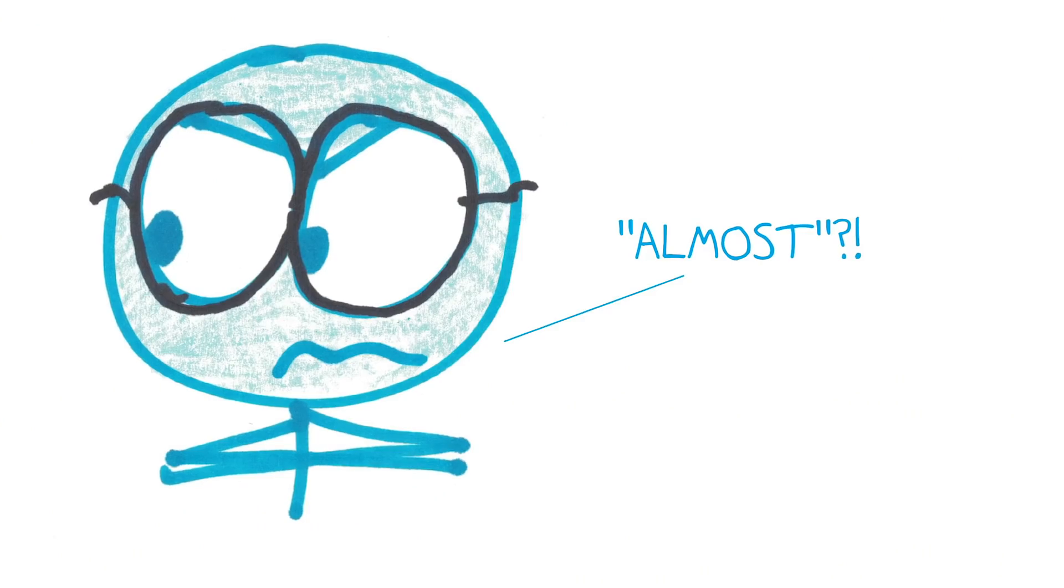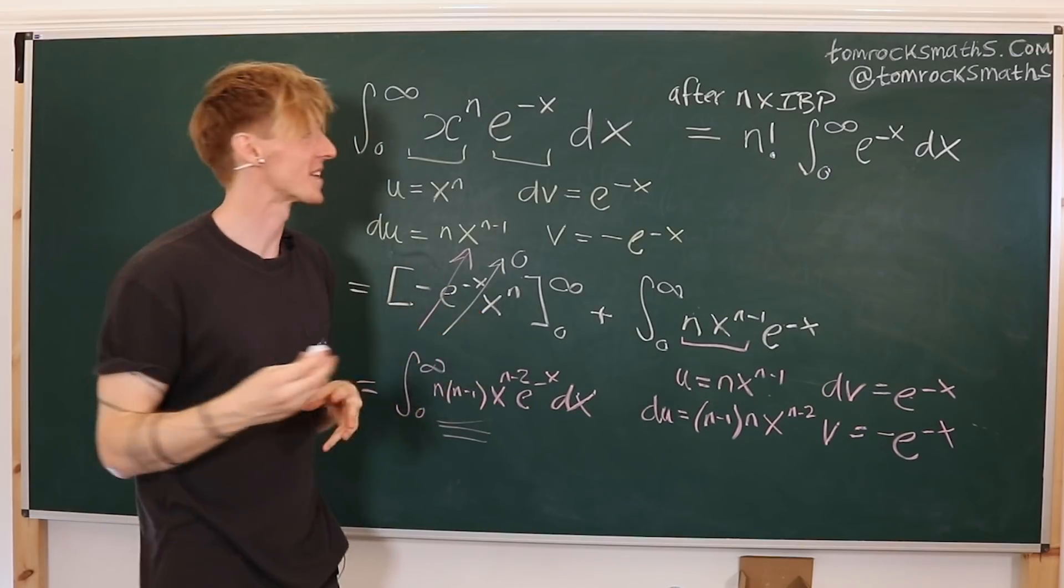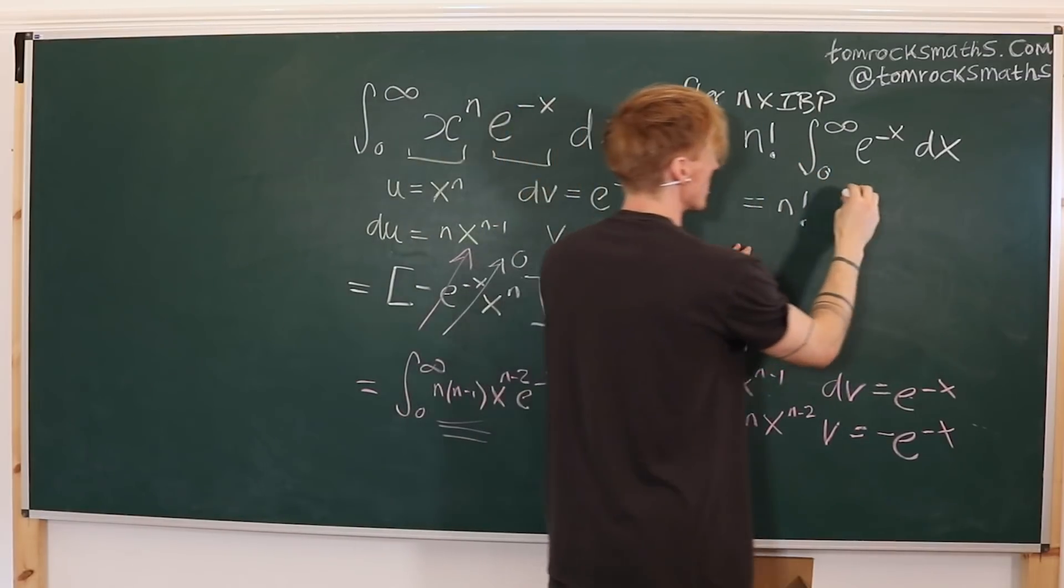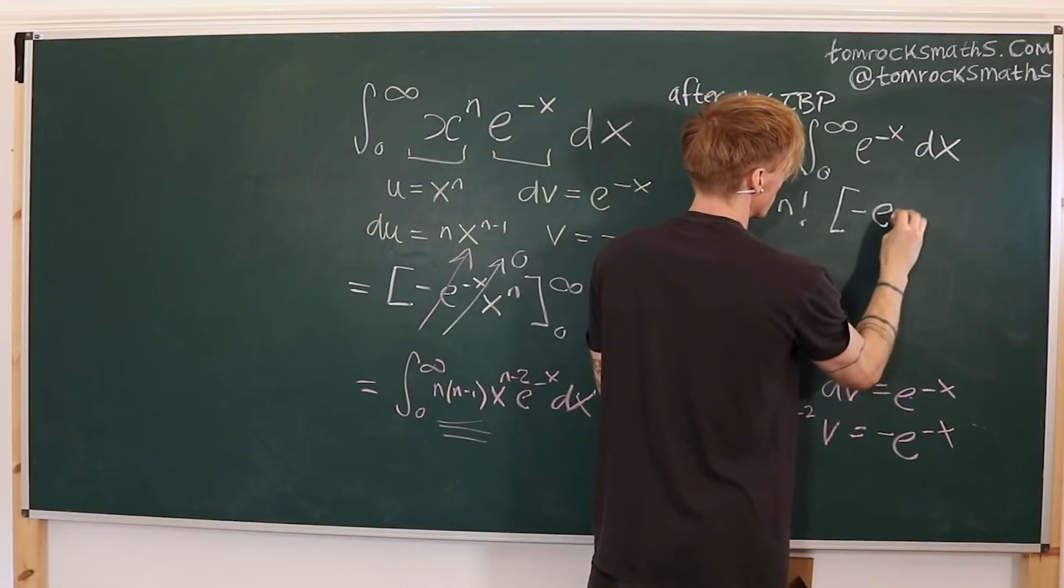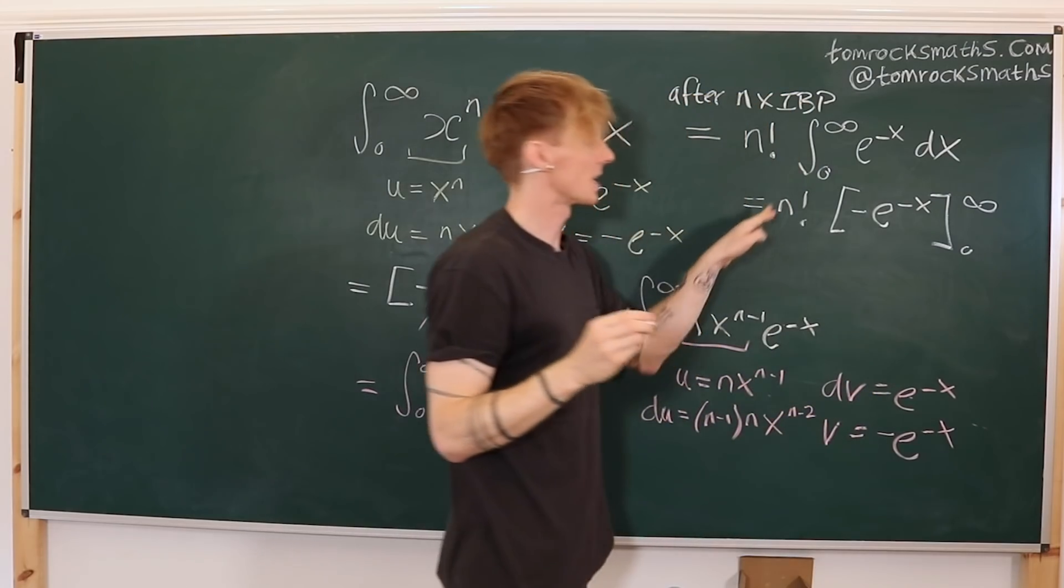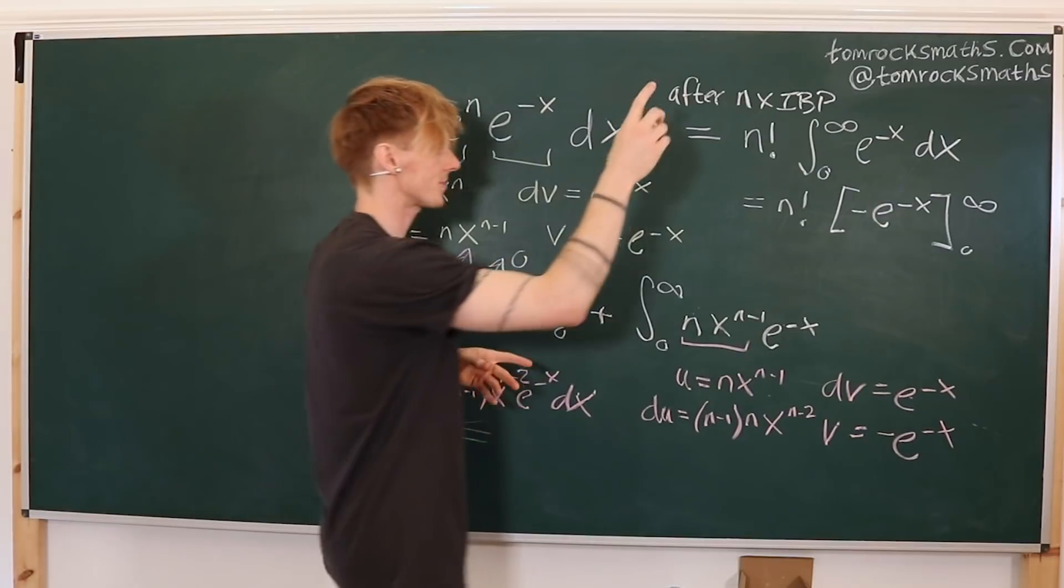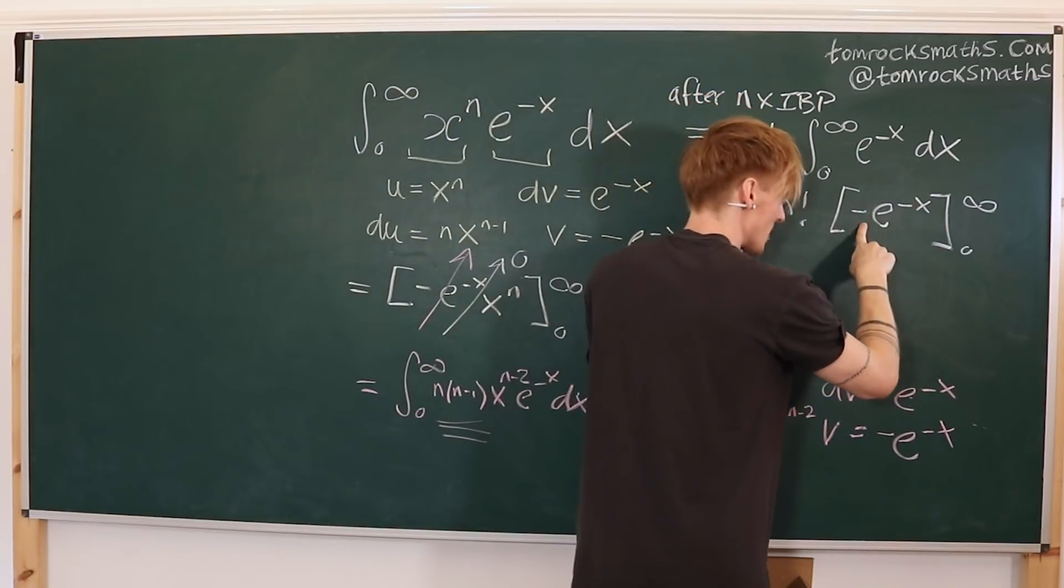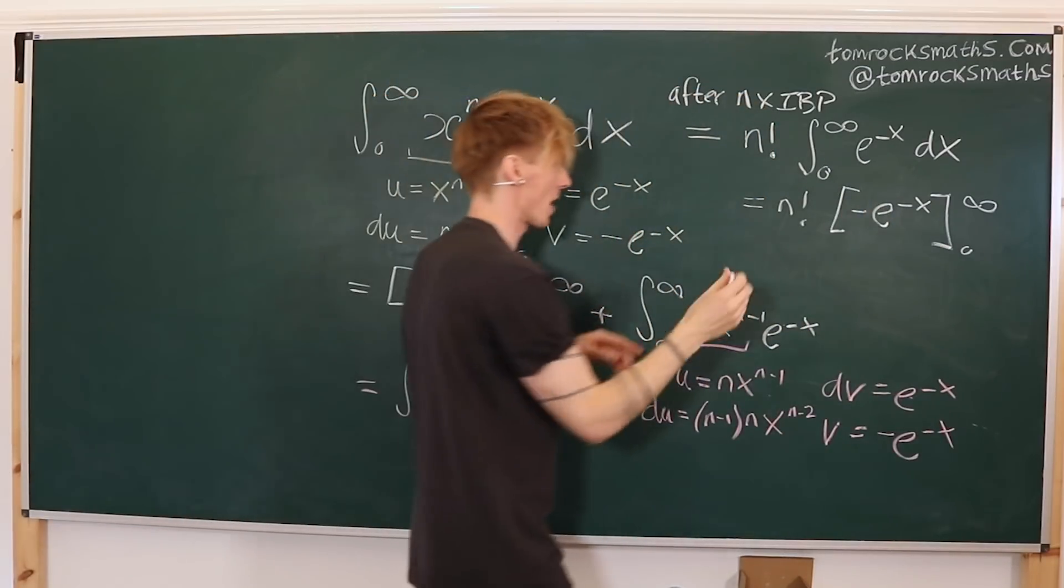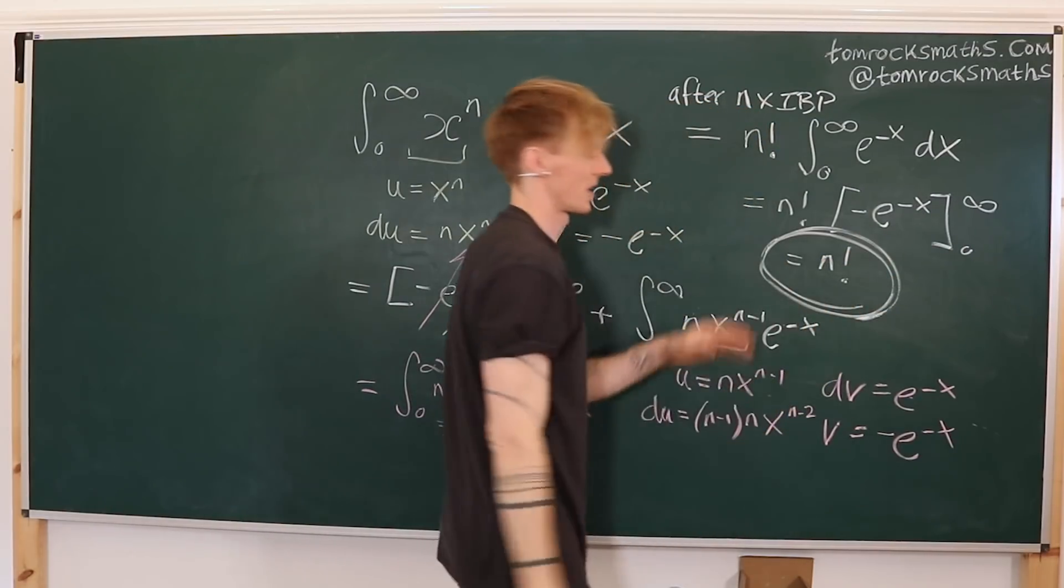So we're almost done. We've got all the way down to something which I think we can now hopefully integrate. So the n factorial just stays out the front. If I integrate this, we did this before, minus e to the minus x between 0 and infinity. Plugging in infinity, e to the minus infinity is 0. And then we've got minus minus 1, because e to the 0 is 1. So the two minuses cancel, so I just get 1. So the final answer is n factorial.